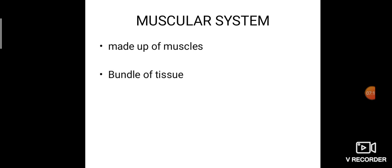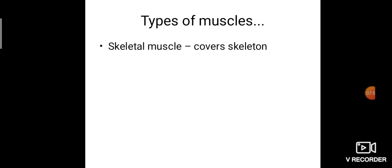The next system is the muscular system. Our bones are covered by muscles, and muscles are covered by our skin. The muscular system is fully made up of muscles. A muscle is nothing but a bundle of tissue. There are more than 600 muscles present in our body — we can't say exactly because body composition varies from person to person.